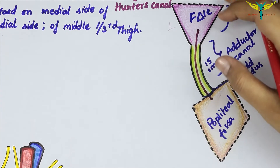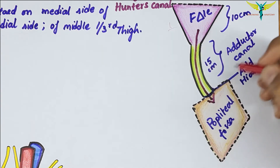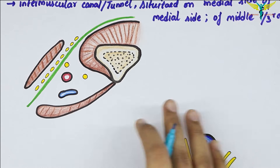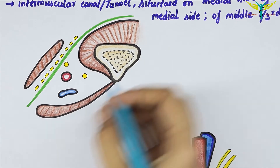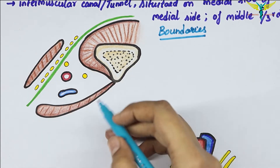The adductor hiatus leads into the popliteal fossa. The adductor canal provides passage to the femoral vessels from the femoral triangle to the popliteal fossa. The adductor canal is triangular in cross-section.